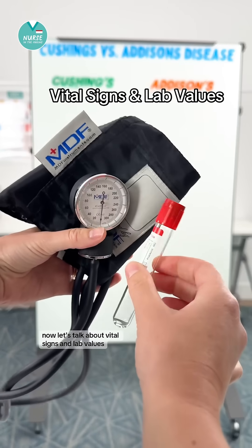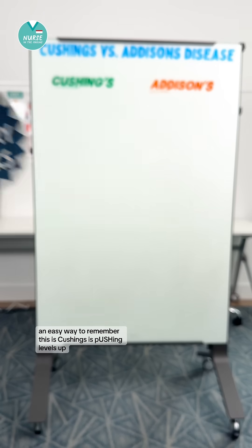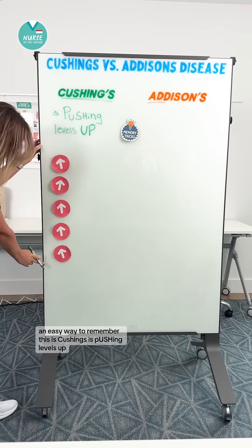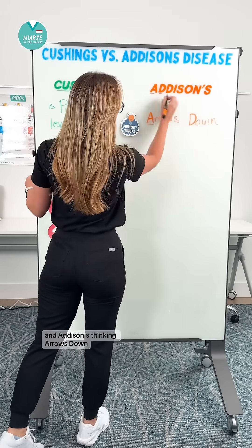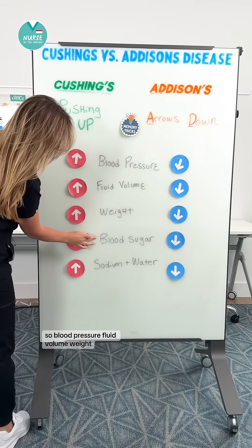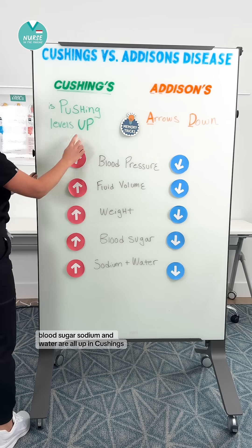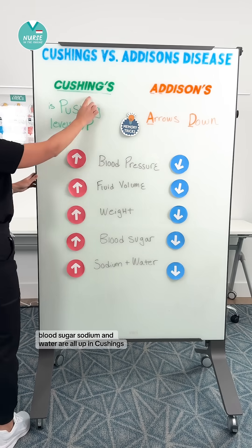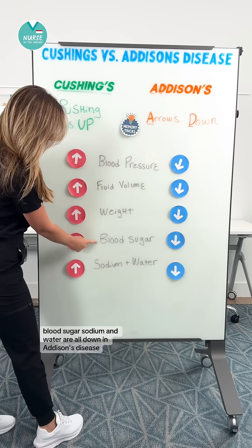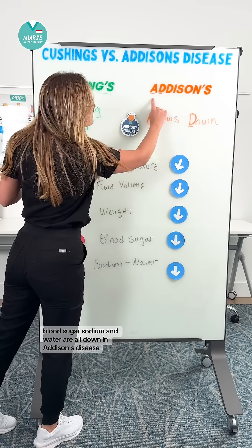Now let's talk about vital signs and lab values. An easy way to remember this is Cushing's is pushing levels up, and Addison's thinking arrows down. So blood pressure, fluid volume, weight, blood sugar, sodium, and water are all up in Cushing's — and all down in Addison's Disease.